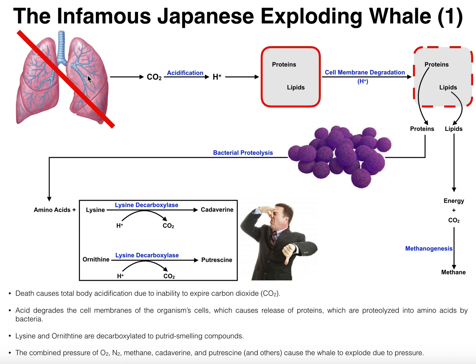When any organism dies, their lungs are going to stop. Your heart stops, your lungs stop, the whole body stops. What we know about the respiratory system is that the lungs are responsible for exhalation of carbon dioxide — getting rid of CO2. Every time you exhale, you're getting rid of carbon dioxide, which from the body's perspective is waste. If you have a deceased organism such as a whale, they're no longer able to get rid of that carbon dioxide, so it's just going to remain inside the organism.